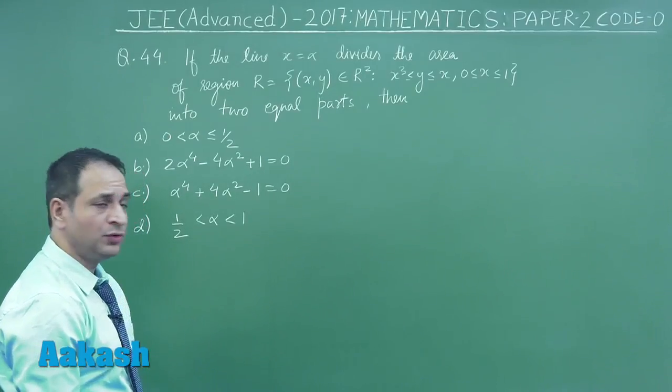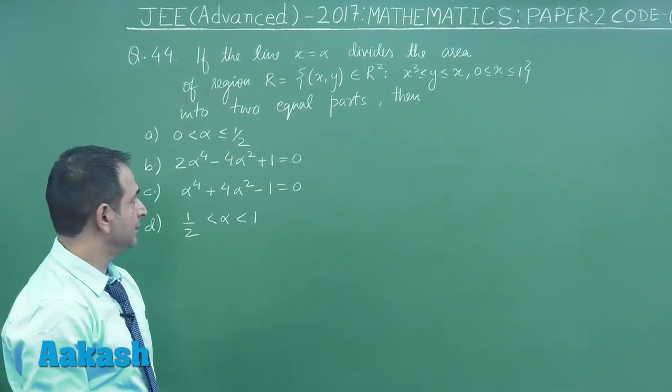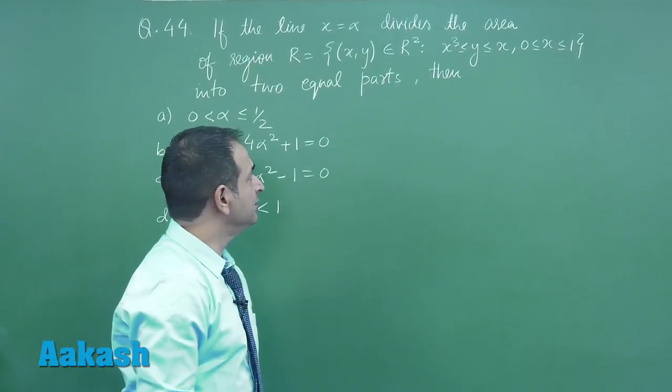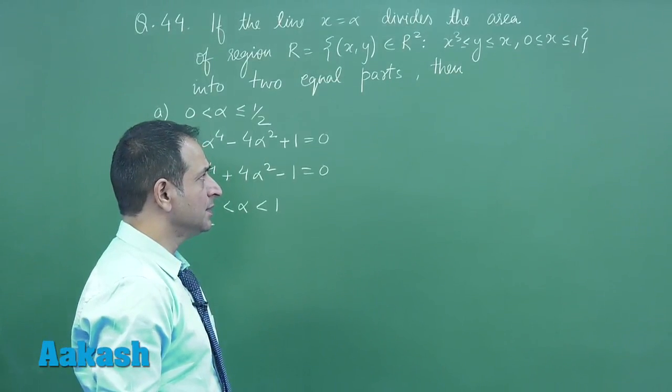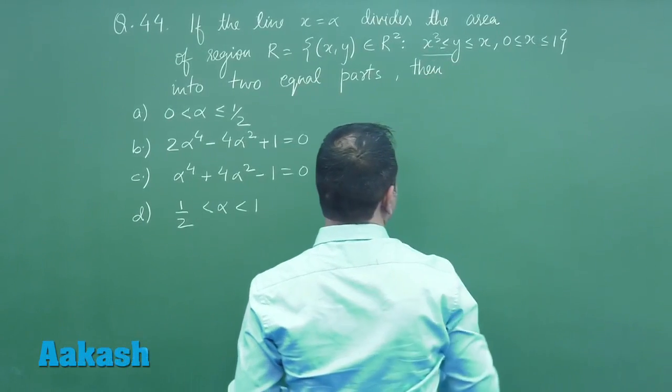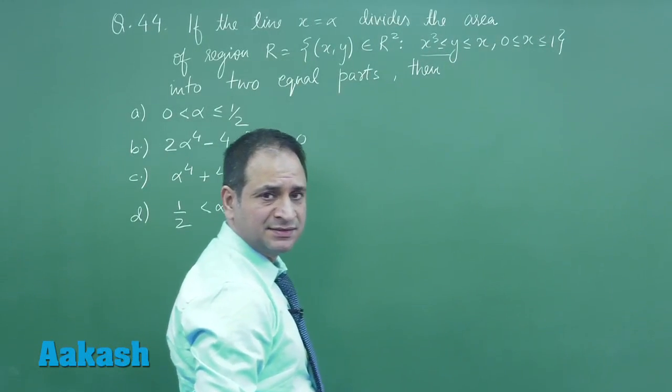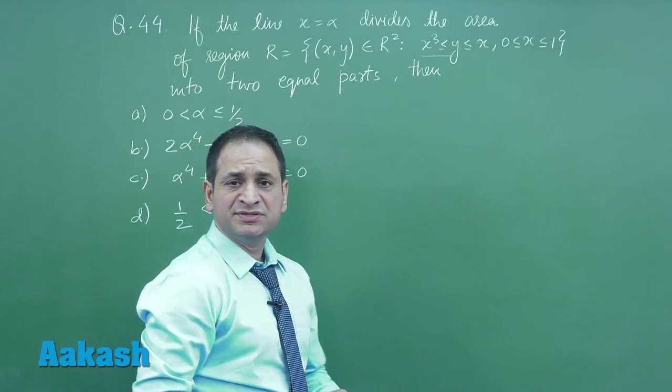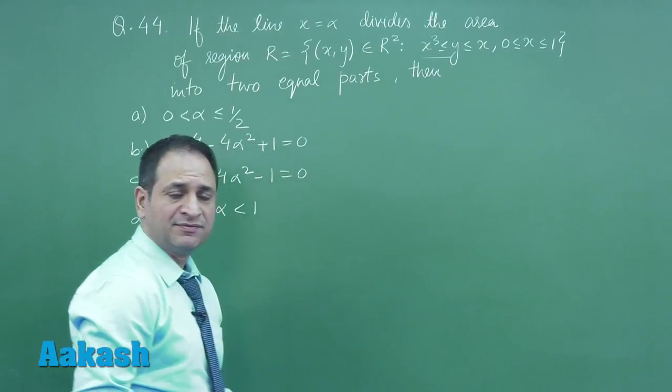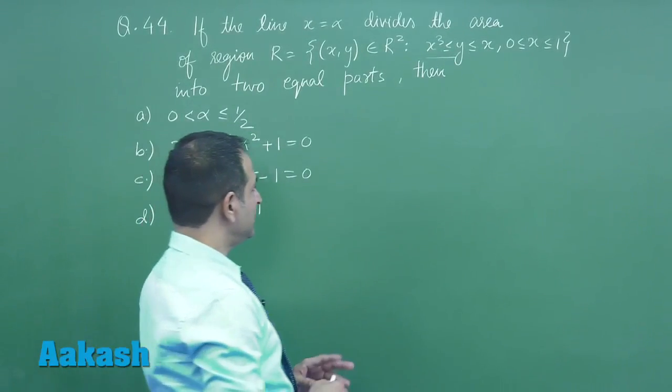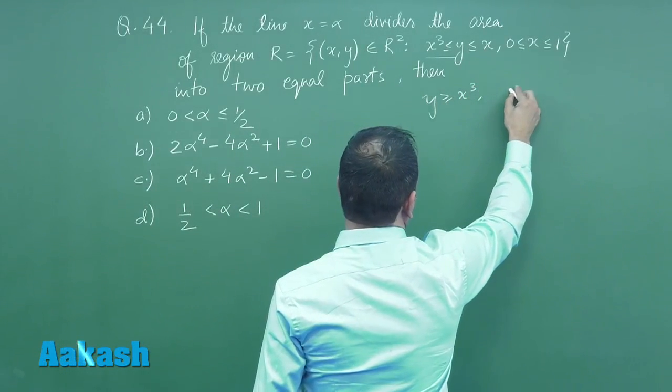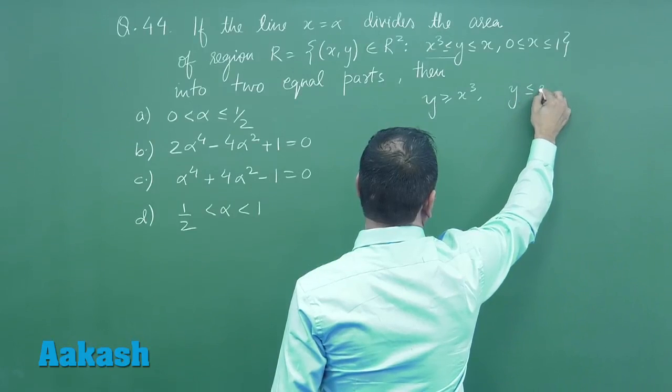Take the question number 44 which is related to the area. What is given to us here is if the line x = α is dividing the area which is bounded by y ≥ x³ and y ≤ x. So let us trace the curve. Let us trace the curve: one is y ≥ x³ and another is y ≤ x.